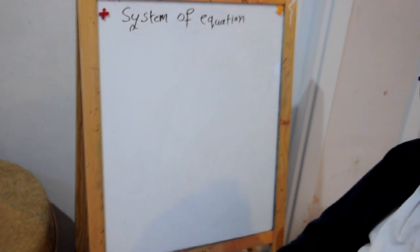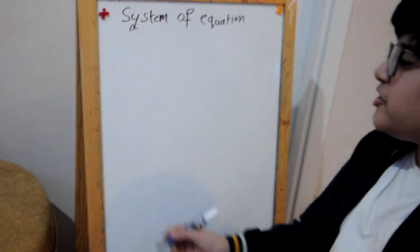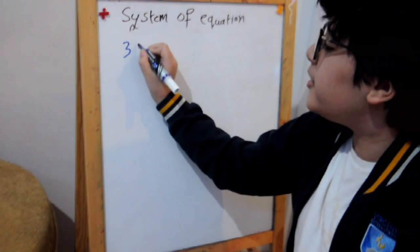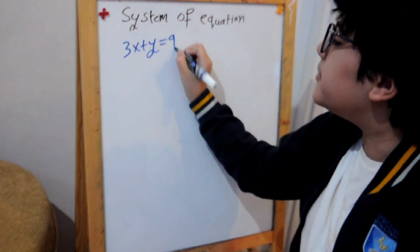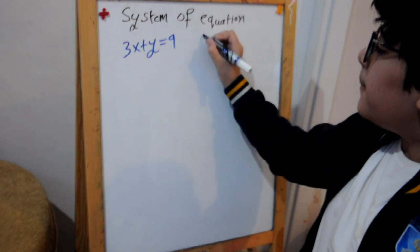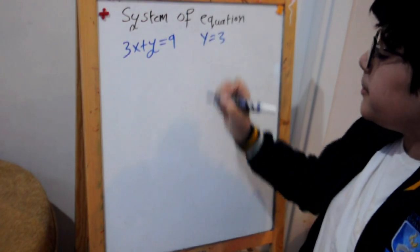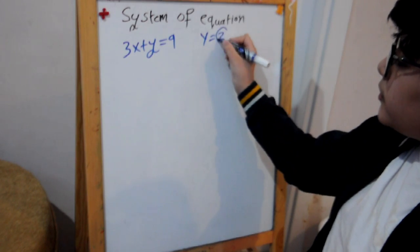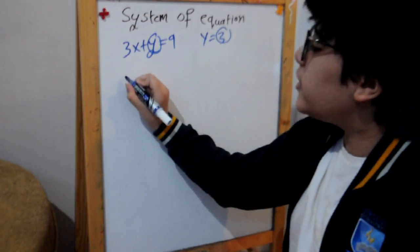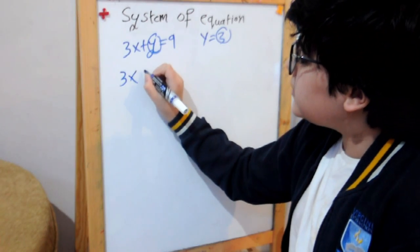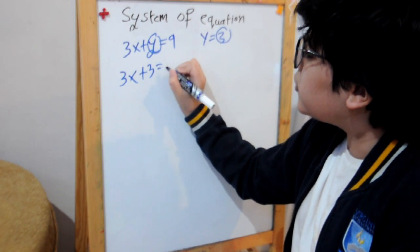The second equation. This is my second equation. It will be 3x plus y which equals 9. The y is 3. So 3 will go instead of y. So it will look like this: 3x plus 3 equals 9.